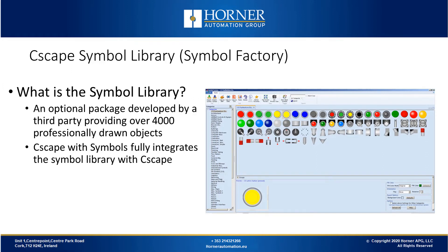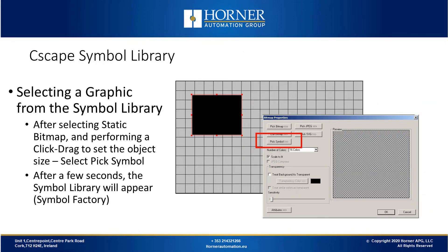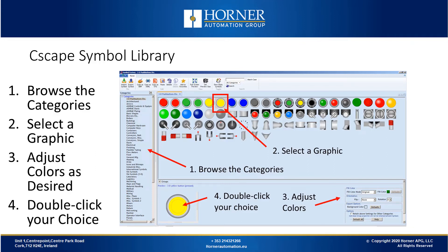Now we'll discuss the Seascape Symbol Library. This is an optional package developed by a third-party company, which contains over 4,000 professionally drawn objects of an industrial theme. All these objects are integrated into Seascape and available to use in your project. Seascape with Symbols fully integrates the Symbol Library with Seascape. Using it is similar to using a regular static bitmap object, but you must have the Symbol version of Seascape installed on your computer before you start. Under the Static Bitmap Object Properties, you select Pick Symbol, and after a few seconds the Symbol Library will appear.